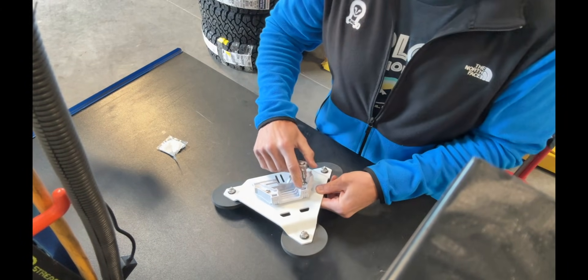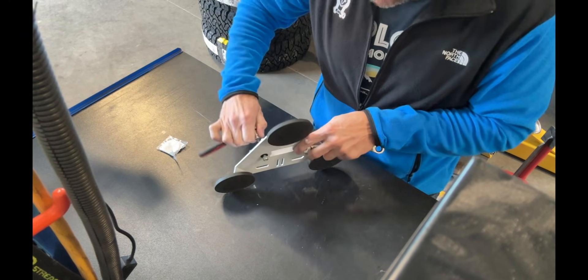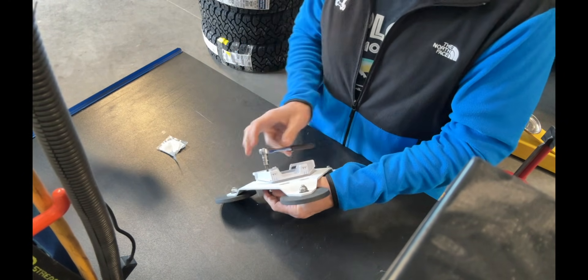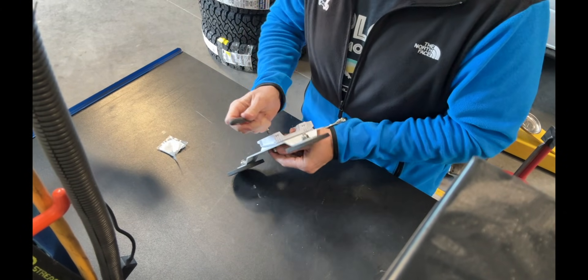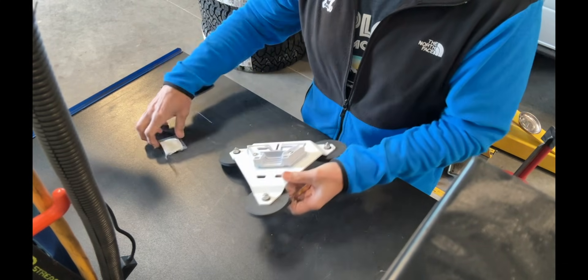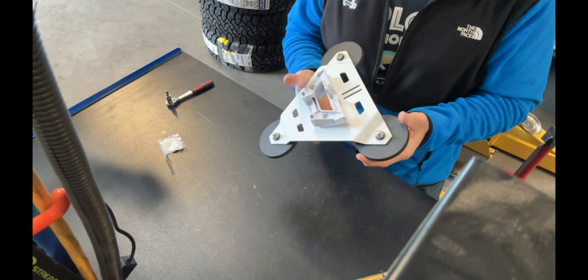You don't want to tighten too much. This is plastic. You just want to snug it. Because if you tighten too much, you can break the plastic. And that right there is the assembly of your Starlink Mini Mount.